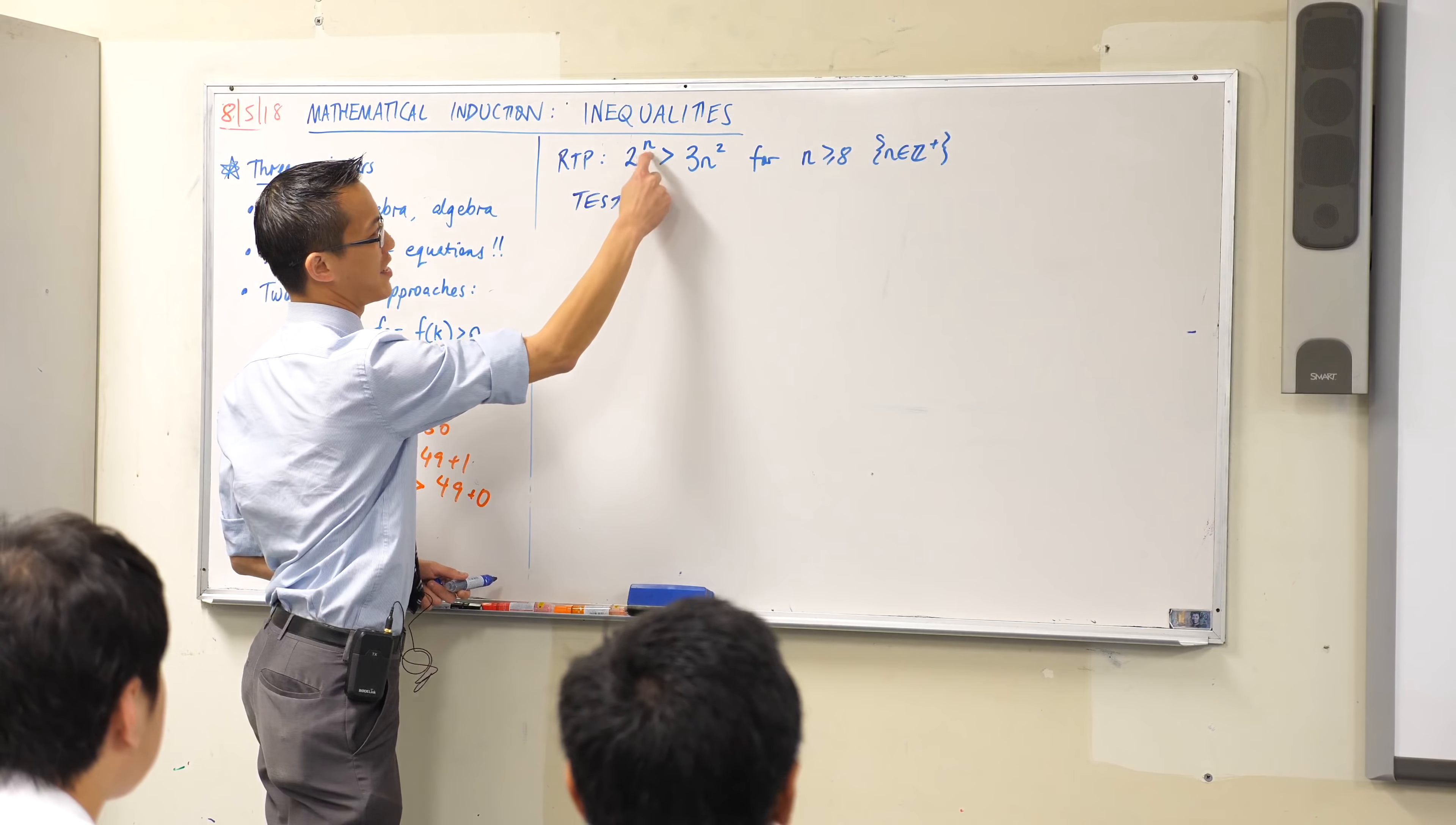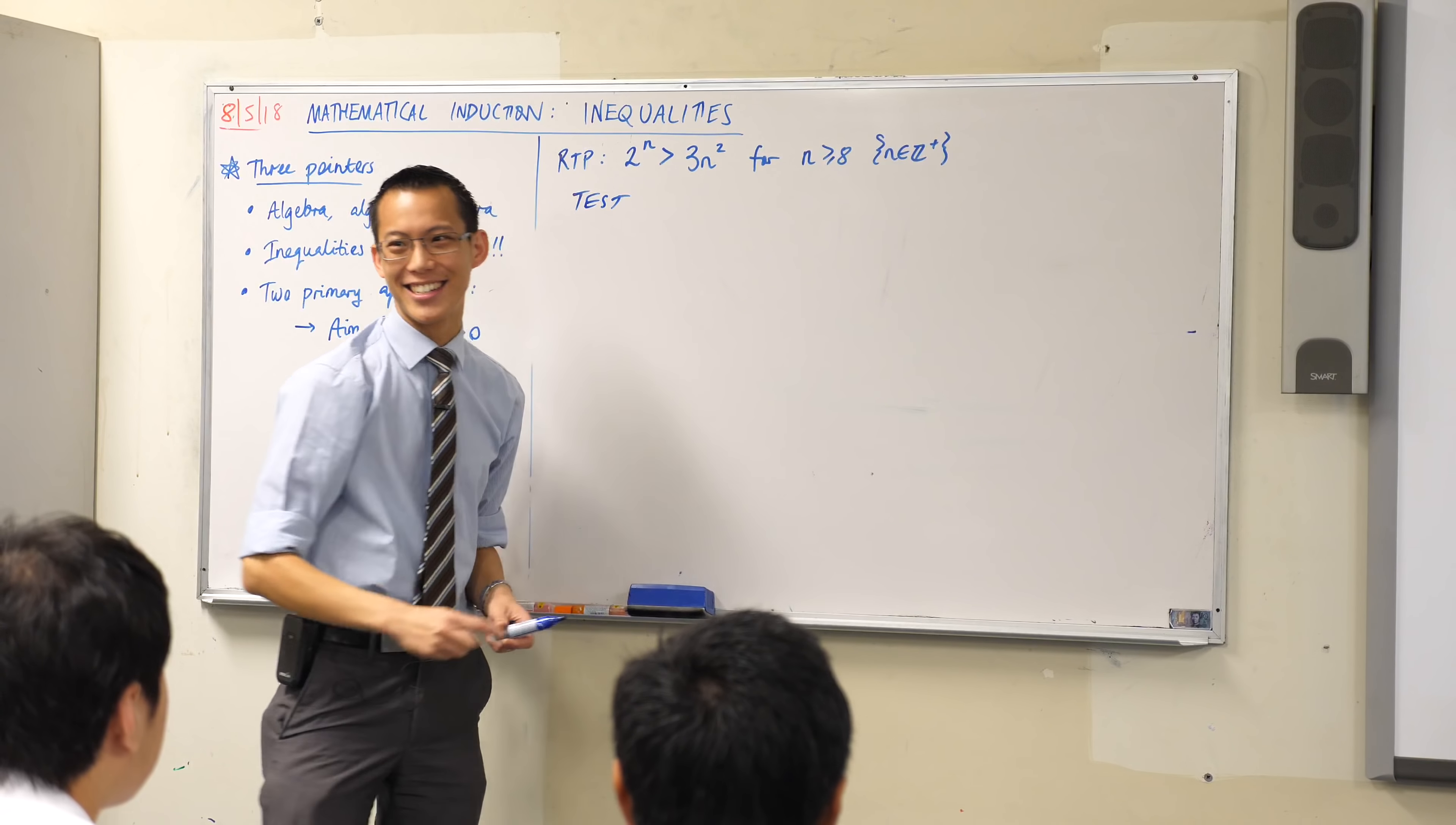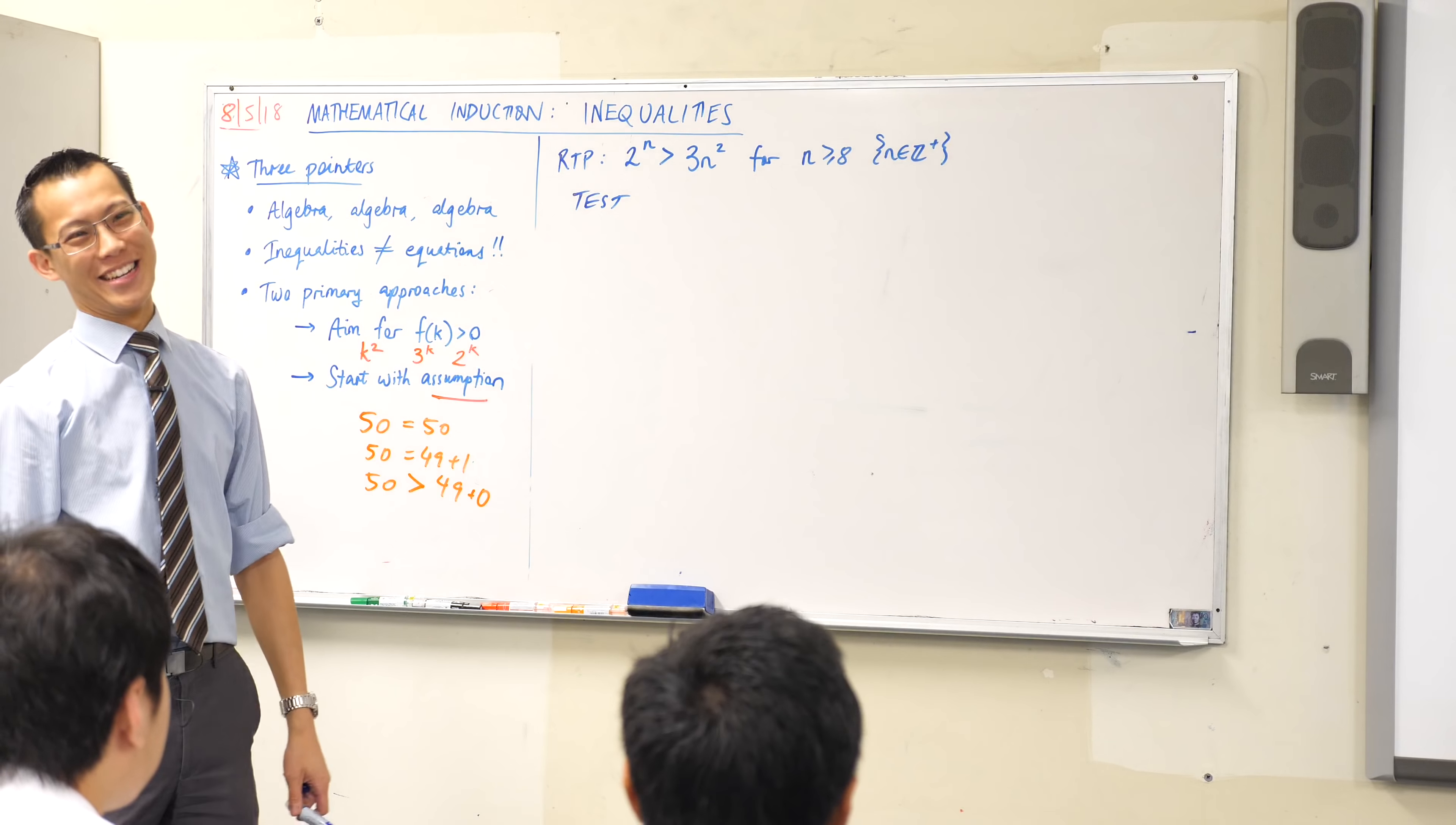Really? Wow guys we got 1, 2, 3, 4, 5, 6, 7, 8, 9, 10, 11, 12, 13, 14, 15 characters into the question and then we stopped reading. We can read more than 15 characters, can't we? First proper value is going to be n equals 8.